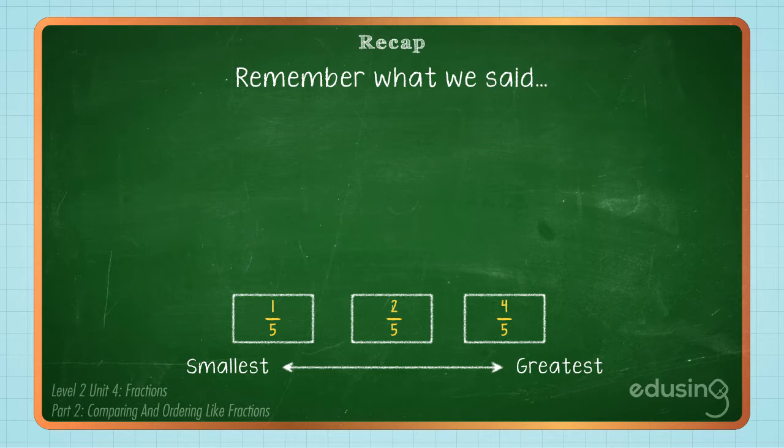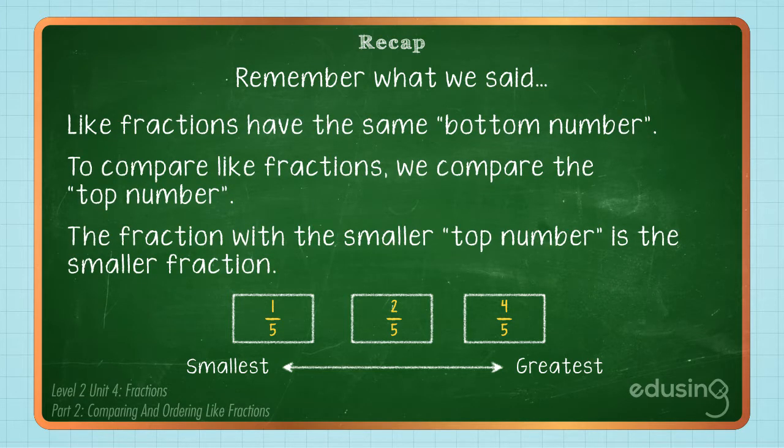Remember, like fractions have the same bottom number. To compare like fractions, we compare the top number. The fraction with the smaller top number is the smaller fraction.